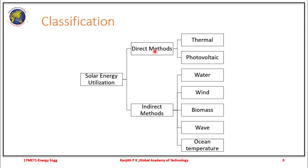There are two methods of usage of solar energy: the direct and indirect. The direct consists of thermal or photovoltaic, whereas the indirect methods include water, wind, biomass, wave, and ocean temperature. Hence, it is often referred to as these being indirect forms of solar energy.